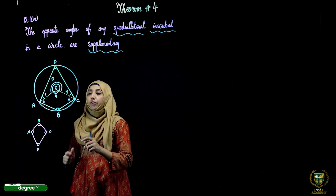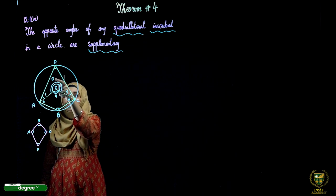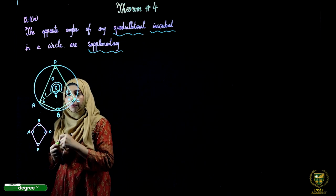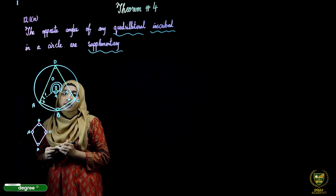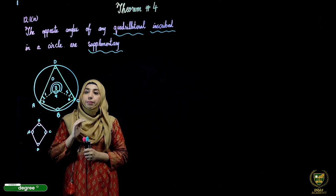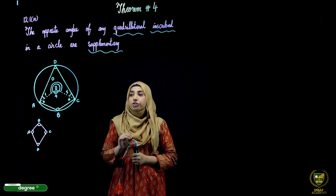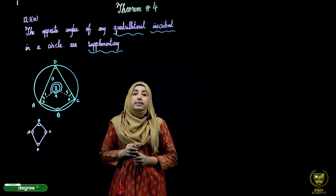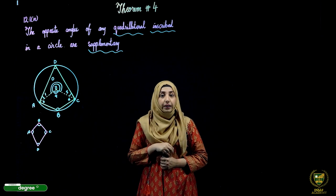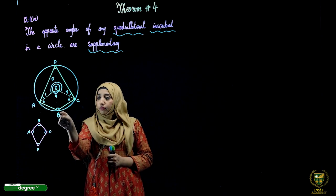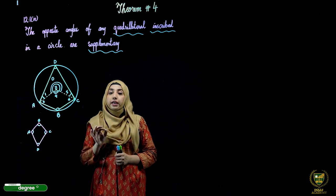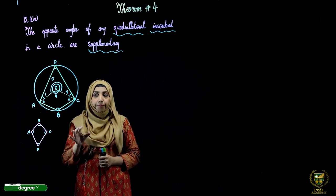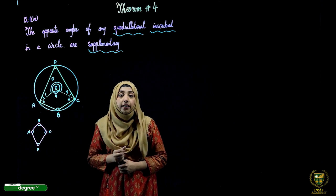Let us first understand the figure clearly. The point O shown here is the center of the circle. Here we have the center and the four vertices of the quadrilateral. Now, in our figure, angle B and angle D are both on the circumference, so both are circum angles. Both angle B and angle D represent circum angles.